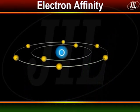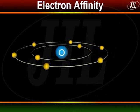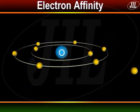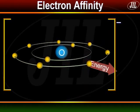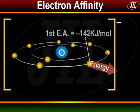Electron affinity is the energy change taking place when an electron is added to an isolated gaseous atom. First electron affinity is the energy released when an electron is added to an atom. In the case of oxygen, it is minus 142 kilojoules per mole.